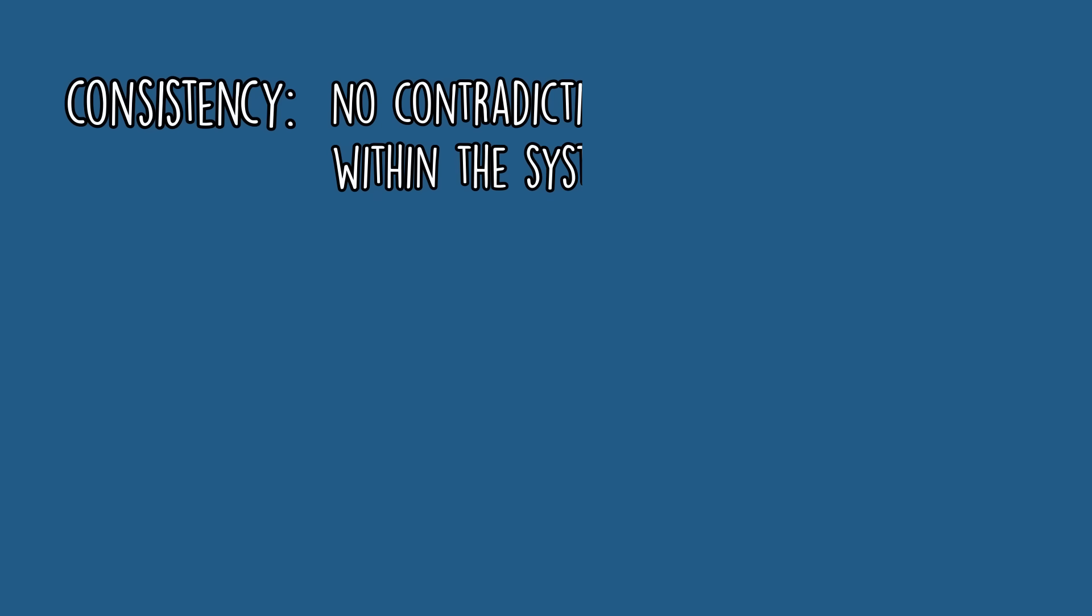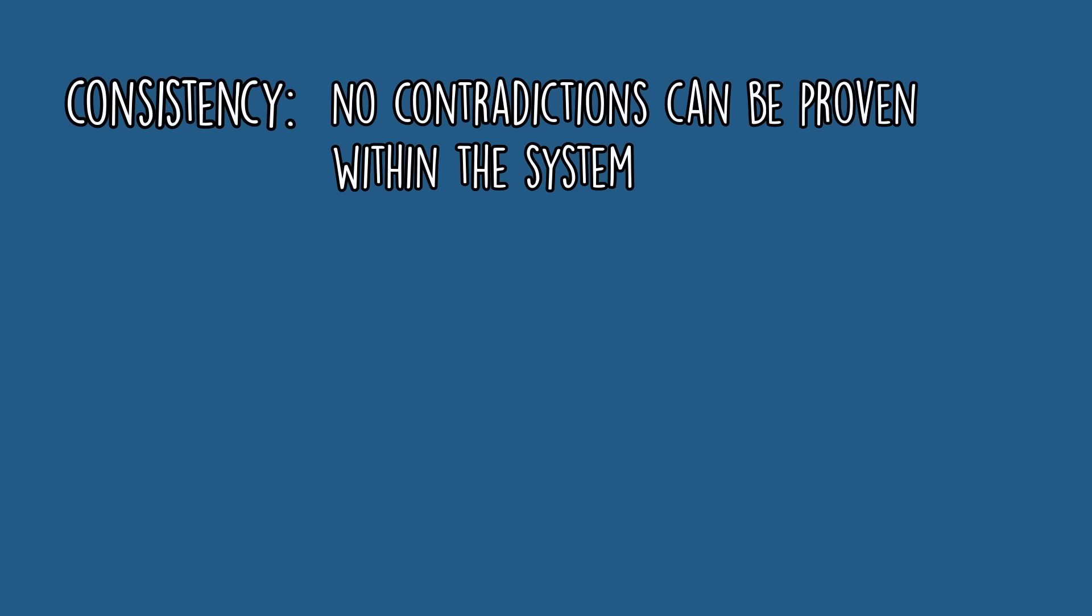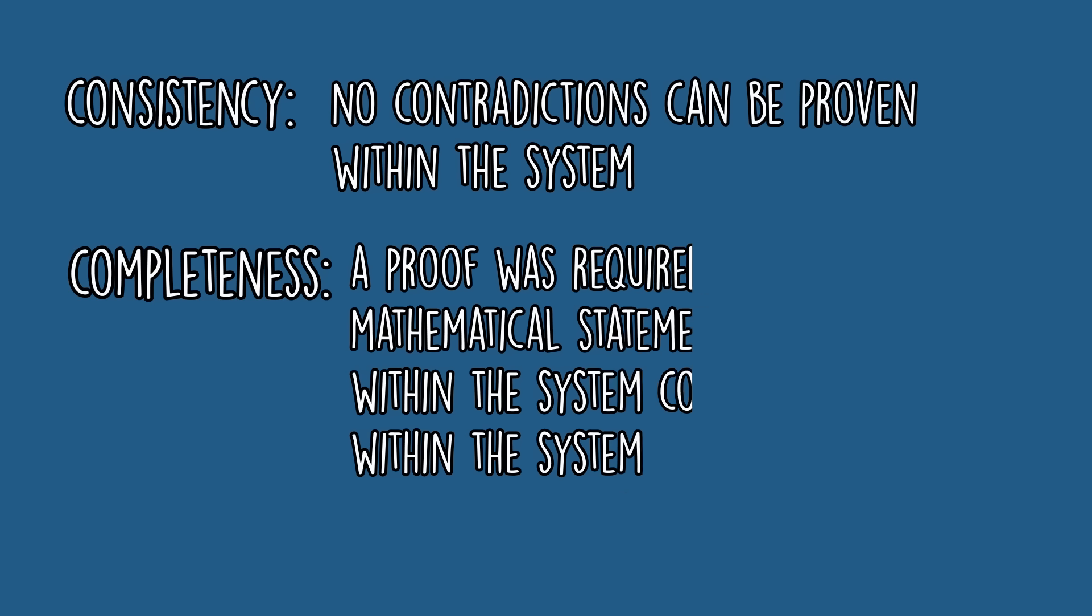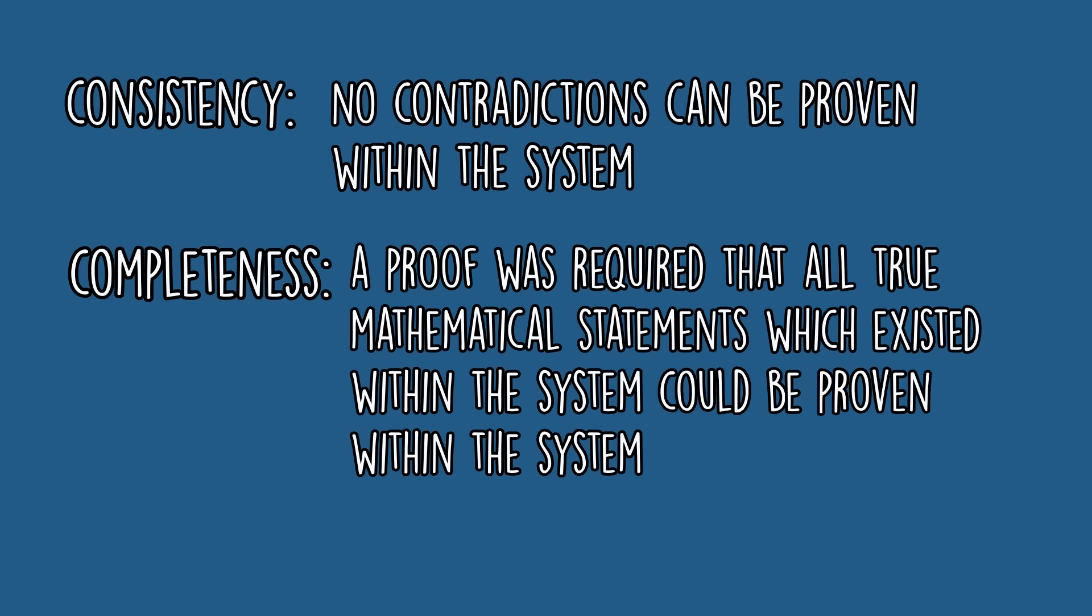Consistency means that no contradictions can be proven within the system. For example, you can't prove that two plus two equals four and that two plus two doesn't equal four. Inconsistencies would render the entire system useless. Completeness means that a proof was required that all true mathematical statements which existed in the system could be proven within the system.